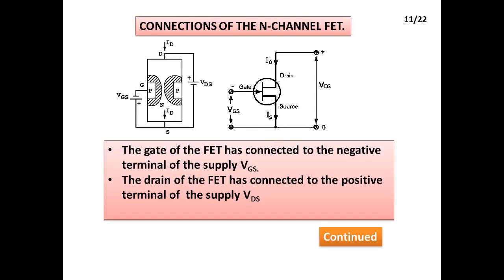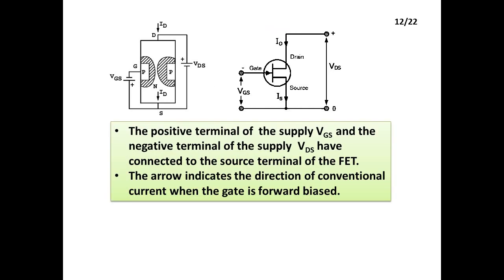Connections of the N-Channel FET: The gate of the FET has connected to the negative terminal of the supply VGS. The drain of the FET has connected to the positive terminal of the supply VDS. The positive terminal of the supply VGS and the negative terminal of the supply VDS have connected to the source terminal of the FET. The arrow indicates the direction of conventional current when the gate is forward biased.